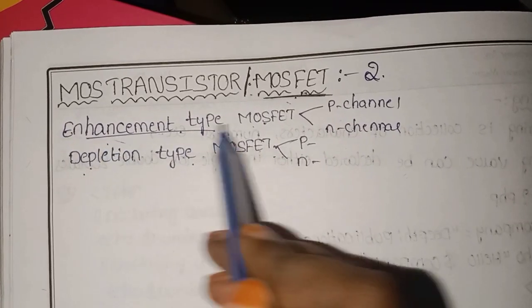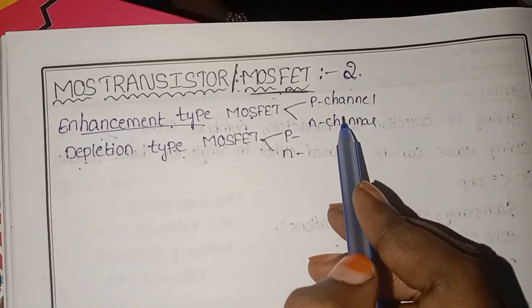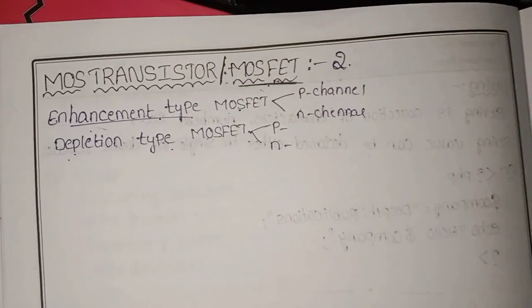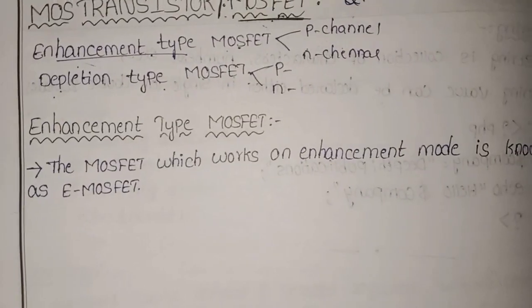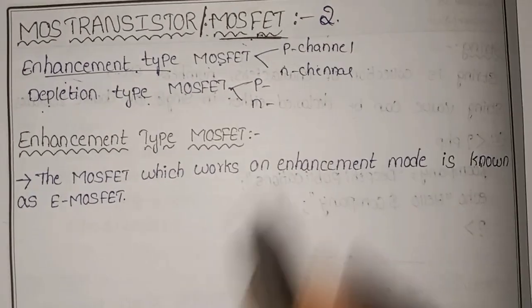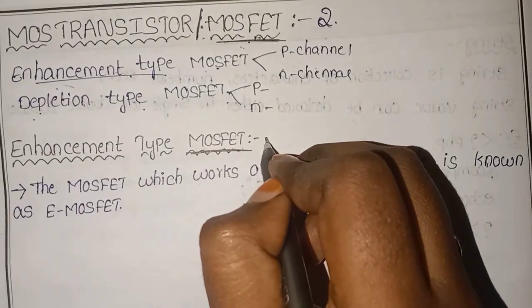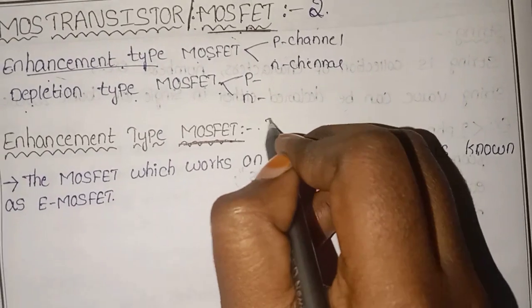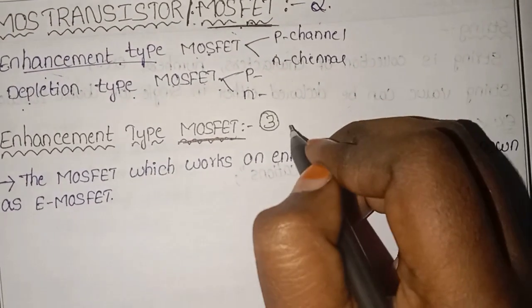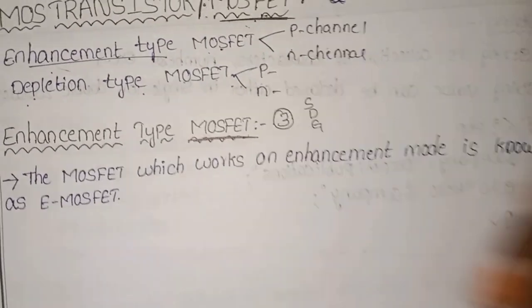The first mode is enhancement type MOSFET. MOSFET has three terminals: source, drain, and gate.